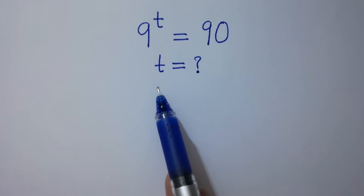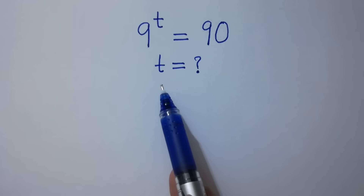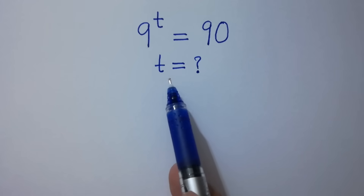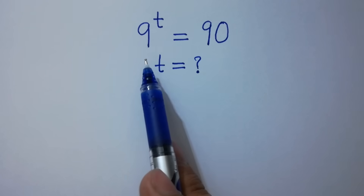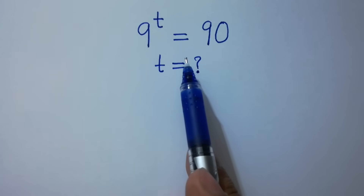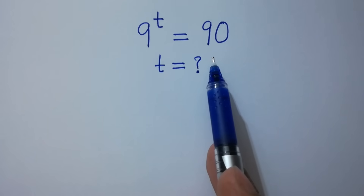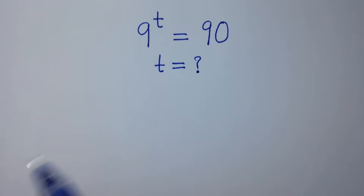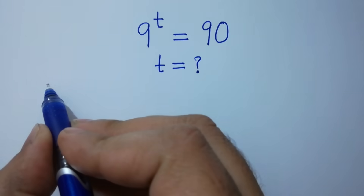Hello friends, find the value of t if 9 to the power t equals 90. Let's have a solution.